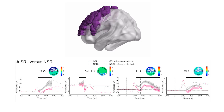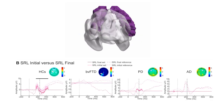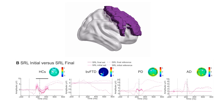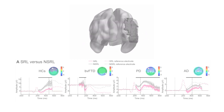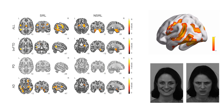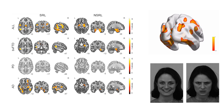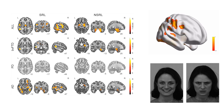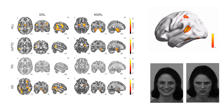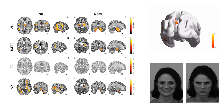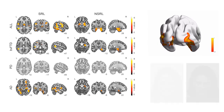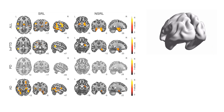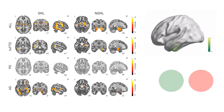Electrophysiological results revealed increased medial frontal negativity modulations indexing both social feedback and learning in healthy controls. Such modulations were selectively disrupted in frontotemporal dementia. Neuroanatomical correlates of socially reinforced learning reveal extended temporoparietal and frontolimbic associations in all groups, with specific temporoparietal correlates in frontotemporal dementia and predominantly frontolimbic correlates in Alzheimer's disease, while no cortical correlates were found in Parkinson's disease.